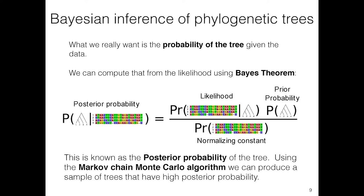The approach we actually pursue is a Bayesian approach to inference. Instead of maximizing the probability of the data, we focus on estimating the probability of all the different trees that have high probability. There's a relationship between the likelihood and the posterior probability, and what Bayes' theorem makes clear is that information you have about evolutionary history before seeing the data is material to what your understanding is after seeing the data. In other words, Bayes' theorem updates your prior knowledge by the new evidence to give you a posterior updated knowledge, and this is the technique we use when inferring evolutionary trees.